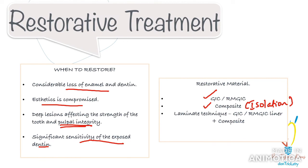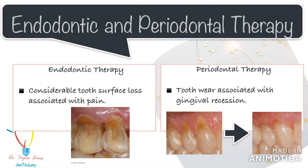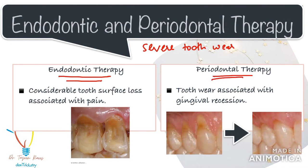For anterior aesthetic cases, always go for composite restorations instead of GIC. You can also use a laminate technique where GIC or resin-modified GIC liner is placed with a composite layer on top. If the tooth wear is very severe and extends to the pulp and the patient complains of pain, you must go for endodontic therapy or root canal treatment, followed by full coverage restoration in the form of a crown. You may also want to consider periodontal therapy in cases where the non-carious cervical lesion is associated with considerable gingival recession — root coverage procedures using free gingival grafts or connective tissue grafts can be included in your treatment protocol.